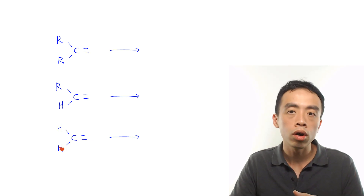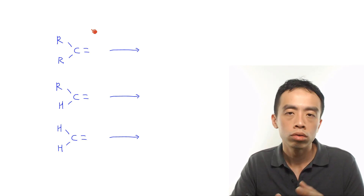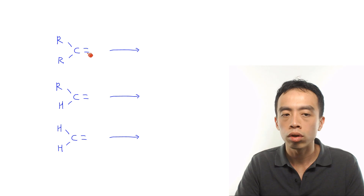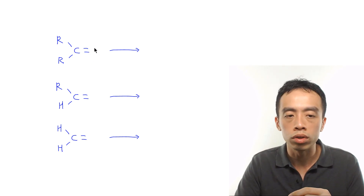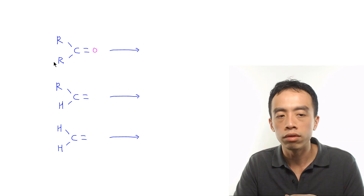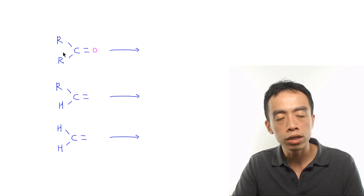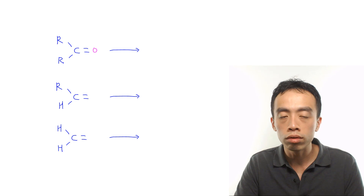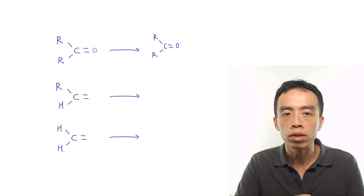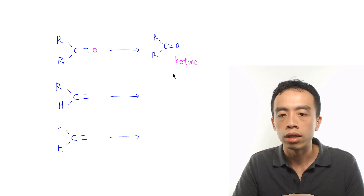On oxidation using hot acidified KMnO₄, the carbon-carbon double bond breaks, so each carbon is short of two bonds. We cover this with an oxygen to form C=O. For a CR bond, we ignore that bond. So for carbon bonded to two R groups, the product will be a ketone functional group — a C=O bonded to two R groups. We use K to annotate the functional group ketone.